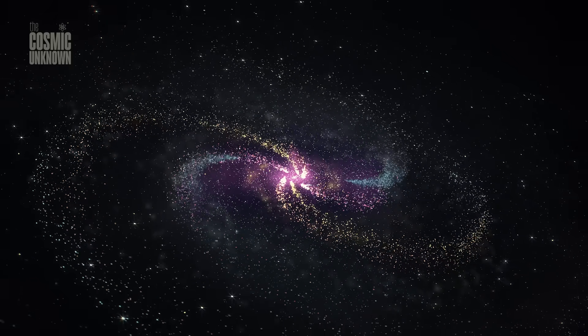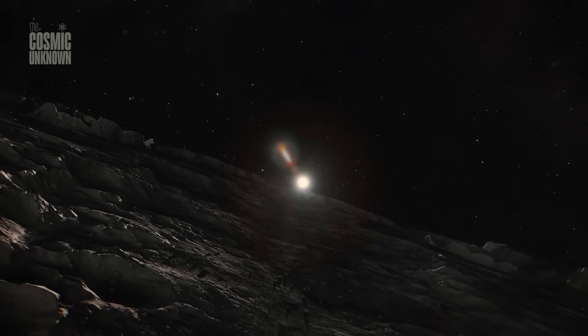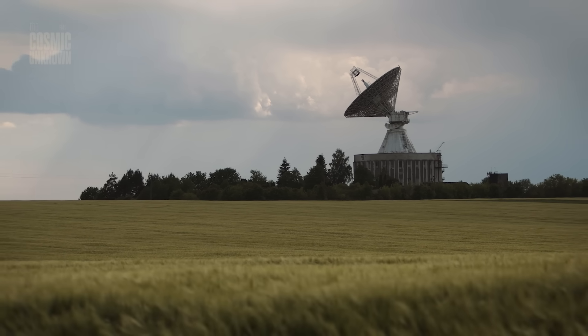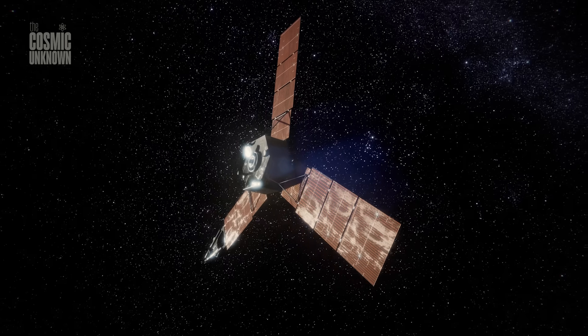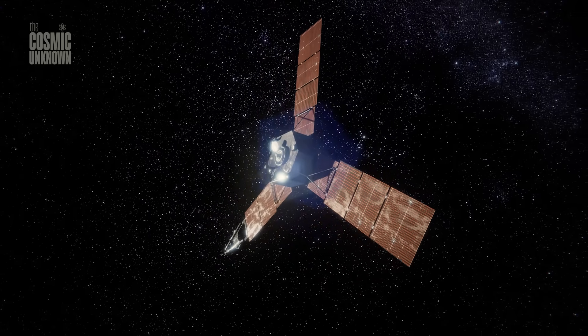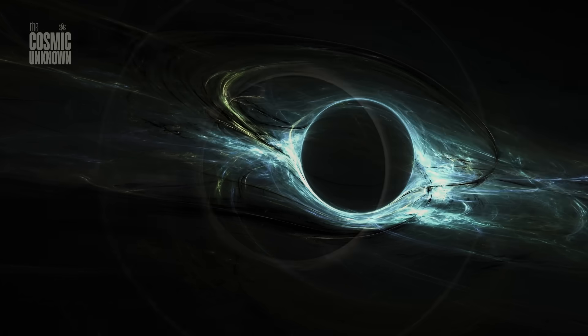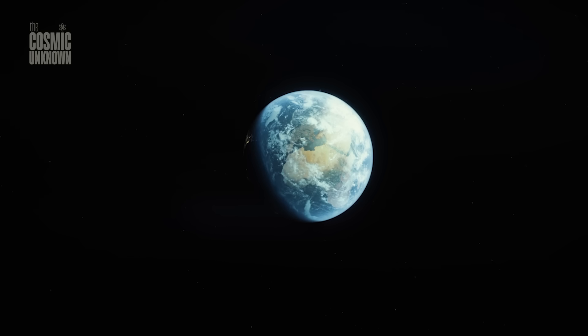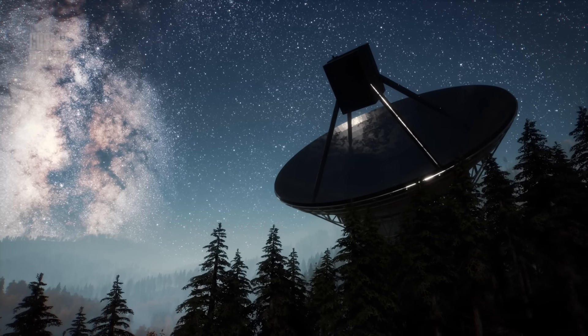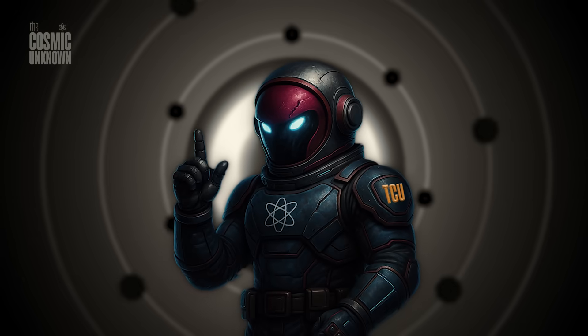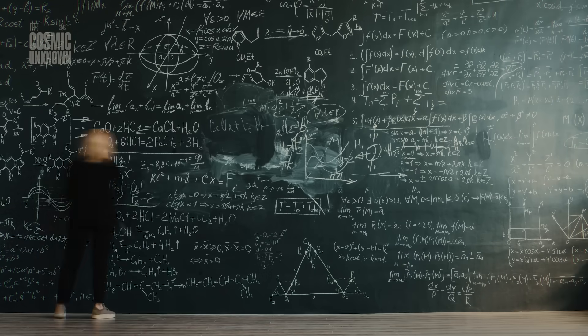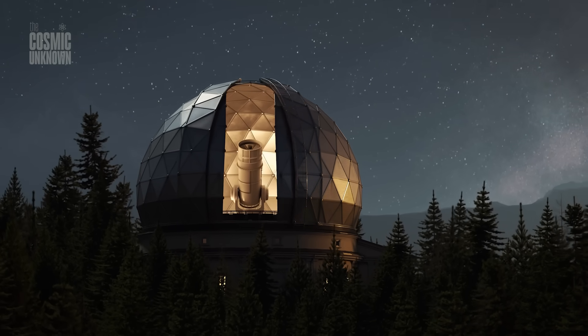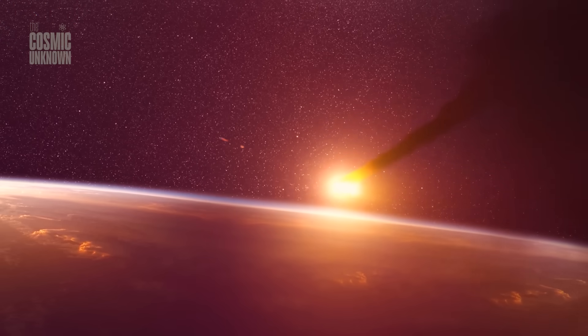In all of human history, we've confirmed only three of these. First came Oumuamua. Fast and strange. Shaped like a shard. And gone before we could truly look. Then Borisov. More familiar. But still undeniably from another sun. And now, 3i Atlas. Not dramatic. Not fiery. Just real. And real is enough.